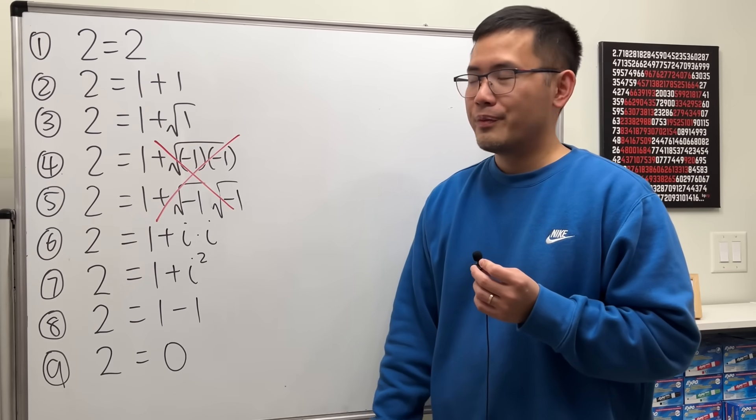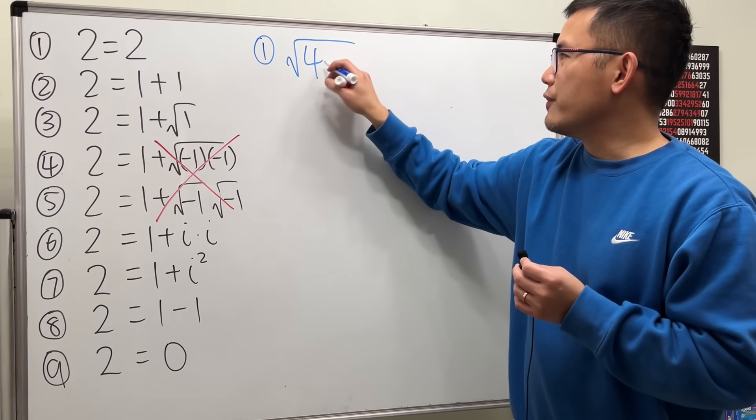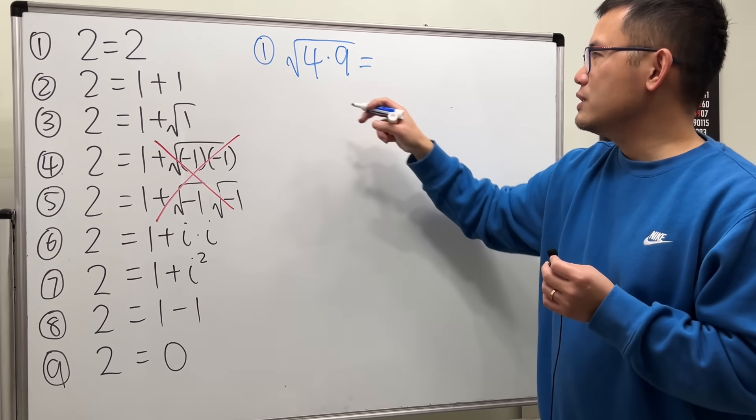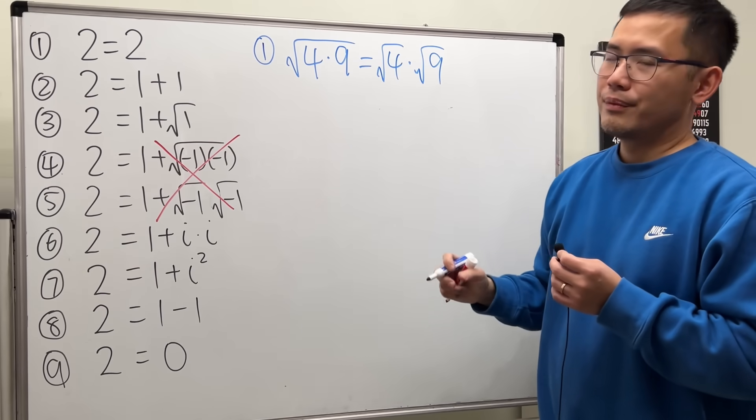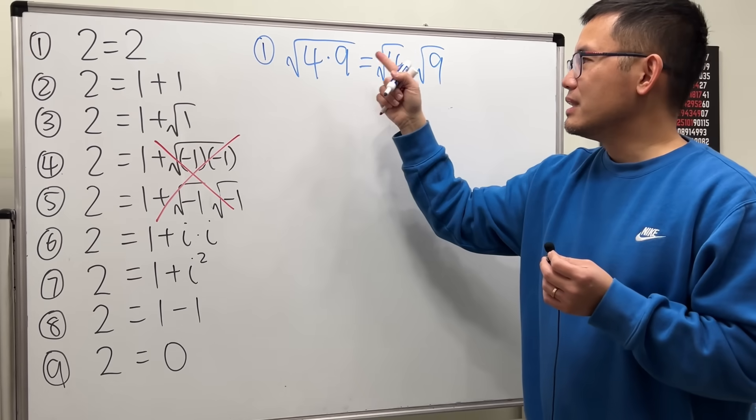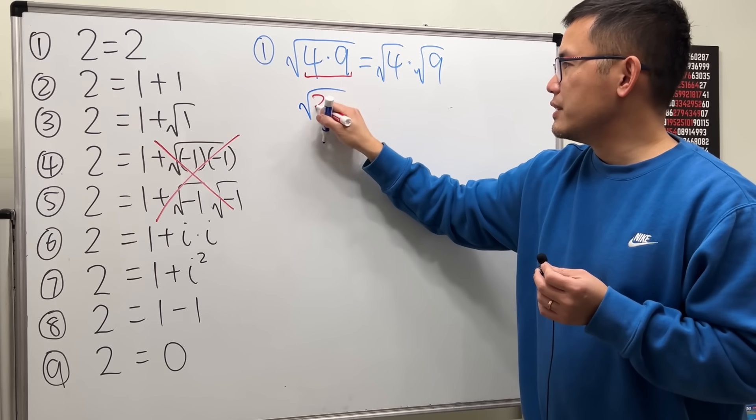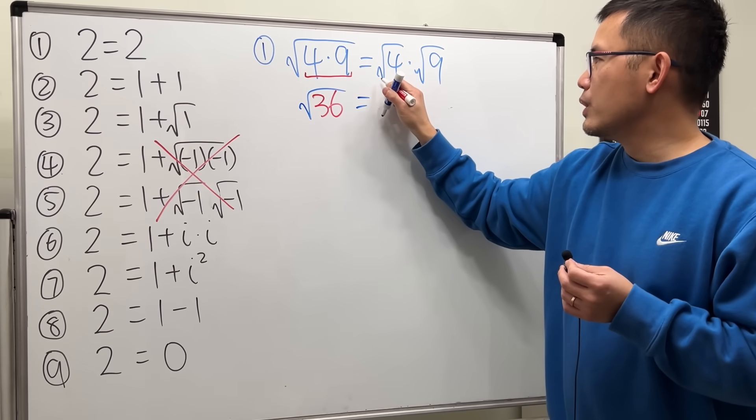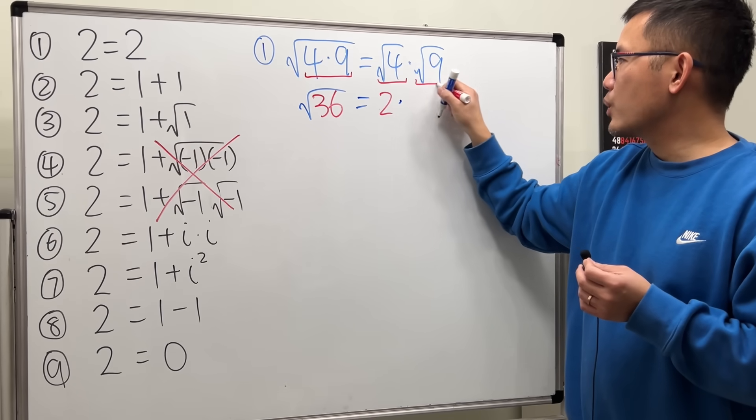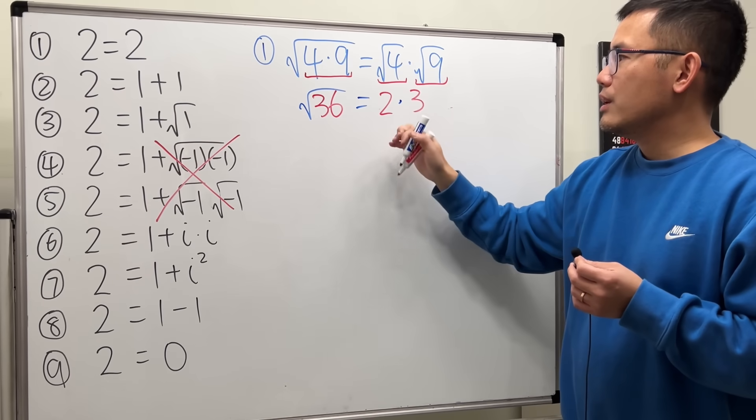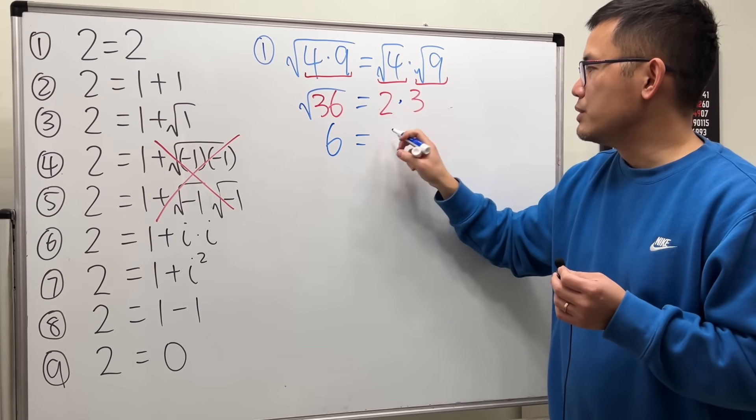Well have a look. If we have square root of 4 times 9, can we say that square root of 4 times square root of 9? Well yes, because on the left hand side, work out the inside first, we get square root of 36, and that's equal to 6. Work out the square root first here times this square root, 2 times 3 is 6. Yes, this right here is totally okay.